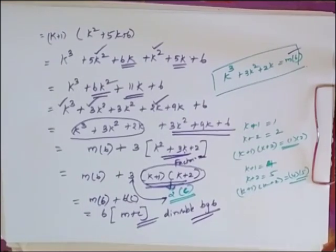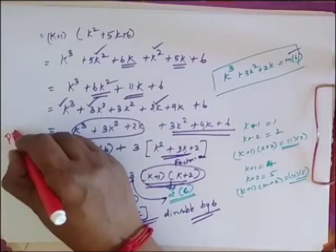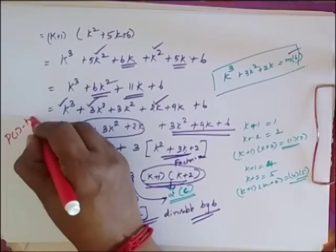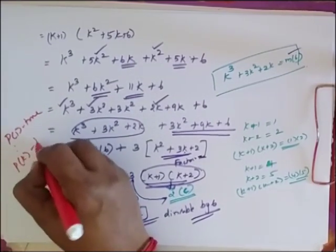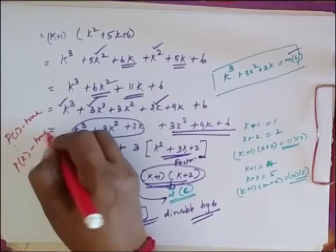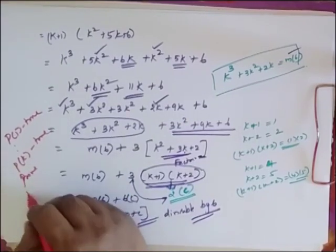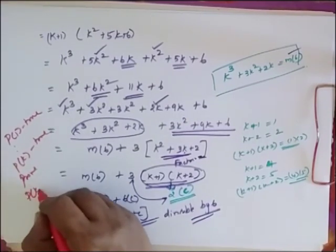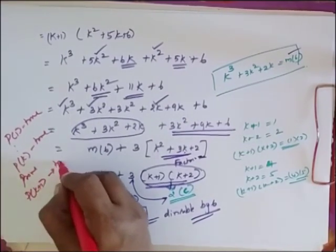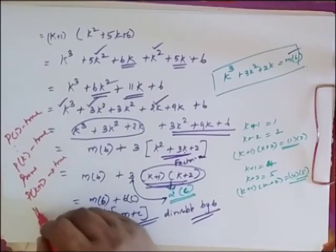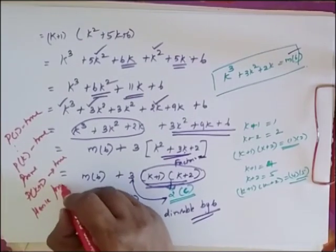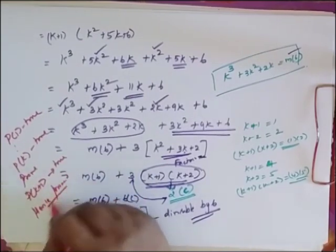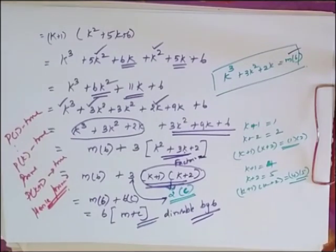So what I have proved is: this is true for P(1). I assume that it is true for P(K), and then I have proved that it is true for P(K+1). Hence, it is true for all values of n greater than or equal to 1.